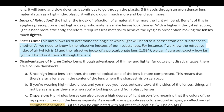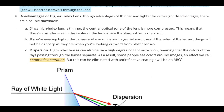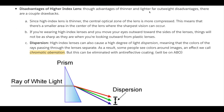You combine light coming from air — refractive index of 1 — with the refractive index of the lens material to apply Snell's Law. Disadvantages of higher-index lenses: though the advantages of thinner and lighter far outweigh the disadvantages, there are a couple of drawbacks. Since a high-index lens is thinner, the central optical zone of the lens is more compressed. This means there's a smaller area in the center of the lens where the sharpest vision can occur.